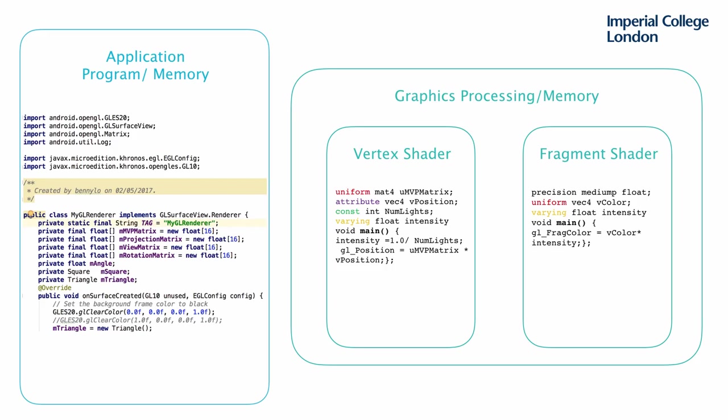As you can see in this example, the shading language is a C-like programming language. We have variables and a main function, and the graphics processing code is all in the main function. In this example, in the vertex shader, we have variables: MVP matrix, v_position, num_light, and intensity. In the fragment shader, we have v_color and intensity.